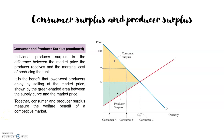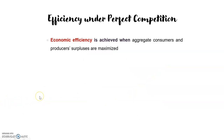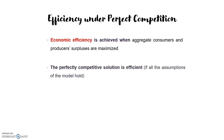Together, consumer and producer surplus measure the welfare benefit of a competitive market. Economic efficiency is achieved when aggregate consumer and producer surpluses are maximized, so a situation where the surpluses are lower would be inefficient. The perfectly competitive solution is efficient if all the assumptions of the model of perfect competition hold.